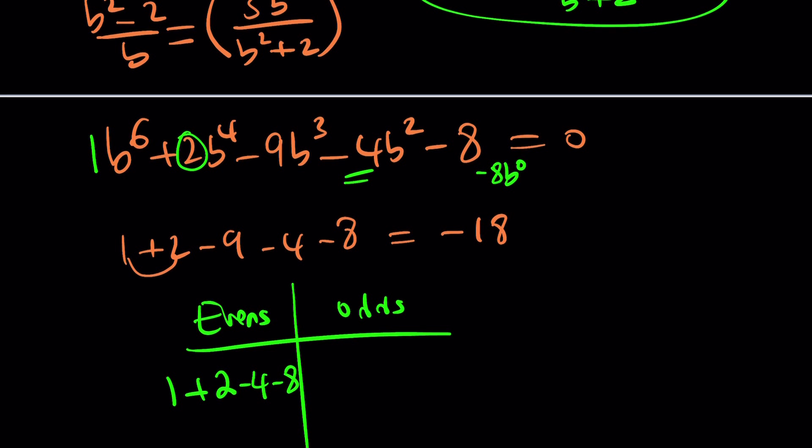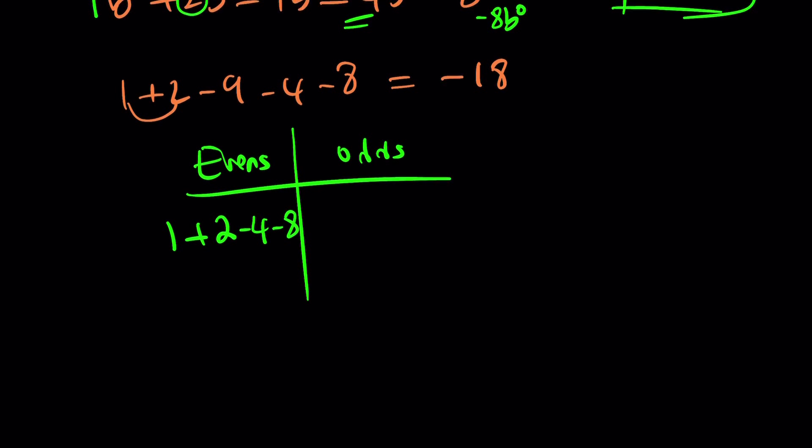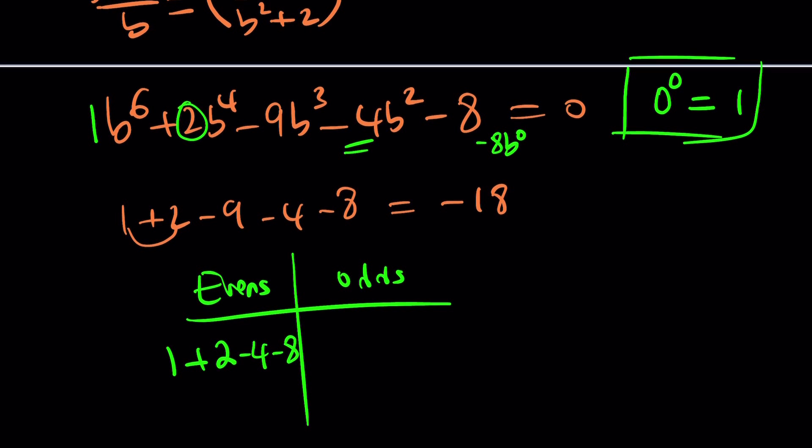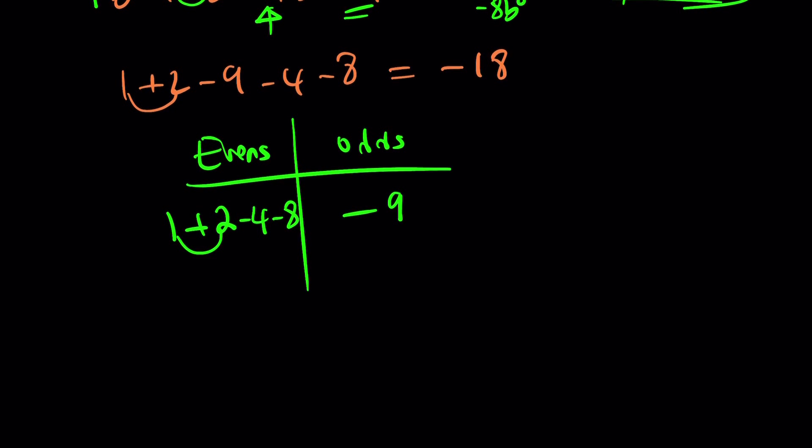And by the way, if you evaluate zero to the power of zero, it's one, but that's a different story. I know some people don't agree, but that's okay. I made a video about it. Anyway, so those are evens, and odds are not that many. Actually, there's only one: negative nine. Great. So, this is going to be like, one plus two is three. Three minus four is negative one. Negative one minus eight is negative nine. Negative nine versus negative nine. Yes, Houston, we have a solution. Which means, b equals negative one is a solution.